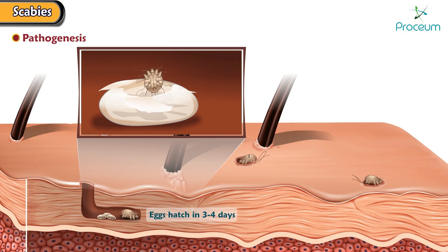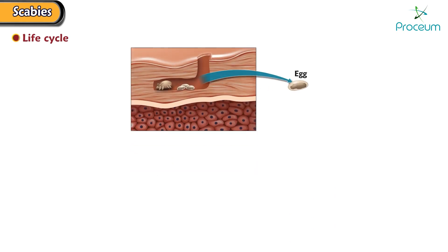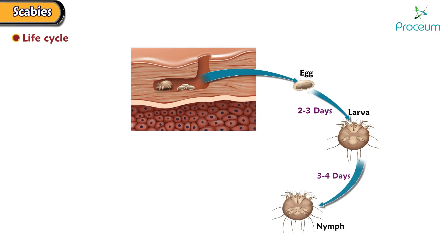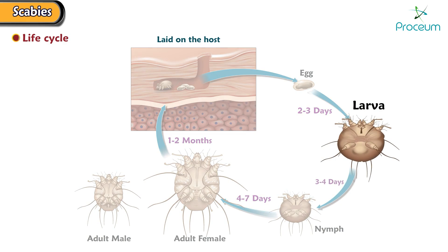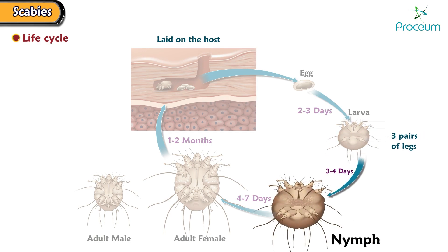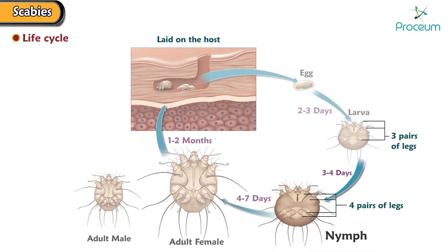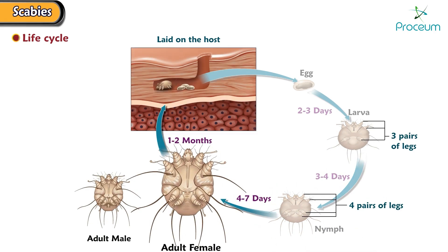Now let's learn about the life cycle of Sarcoptes scabiei. The mite life cycle consists of egg, larva, nymph, and adult stages. Eggs are laid on the host. The larva hatches from the egg and is identified by 3 pairs of legs. The larva molts into a nymph, which has 4 pairs of legs, and molts into the adult. The adult mite with 4 pairs of legs lives in or on the host.